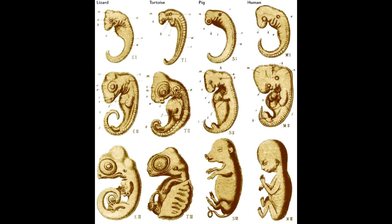Embryology is the study of the development of embryos. An embryo is an unborn or unhatched offspring in one of the earliest stages of its development. Serial structures such as limbs are usually identical in the embryo but specialized and diverged as an adult. Different species in the same class, such as mammals, often have very similar embryos even if the adult forms are quite different. In the diagram, a lizard embryo is to the far left, followed by a tortoise, a pig, and a human embryo. You can see how similar they look in the beginning and how they grow distinct features as they develop.